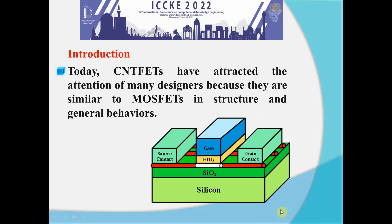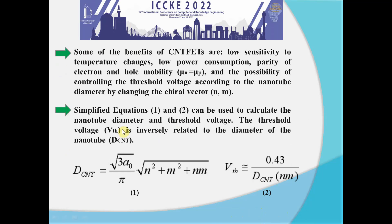Today, CNTFETs have attracted the attention of many designers because they are similar to MOSFETs in structure and general behaviors. This is a schematic diagram of a MOSFET-like CNTFET that shows the similarity. Some of the benefits of CNTFETs are low sensitivity to temperature changes, low power consumption, parity of electron and hole mobility (μn = μp), and the possibility of controlling the threshold voltage according to the nanotube diameter by changing the chiral vector (n, m). Equations 1 and 2 can be used to calculate the nanotube diameter and threshold voltage. The threshold voltage is inversely related to the diameter of the nanotube.